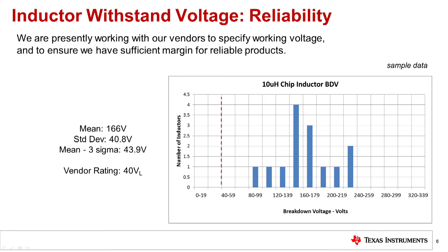Here is an example showing the inductor voltage breakdown of a few samples. The mean failure occurred at 166 volts with a standard deviation of 41 volts. A 3-sigma limit would rate this inductor for 44 volts, and the inductor vendor specified this device for 40 volt operation.